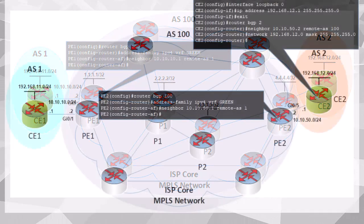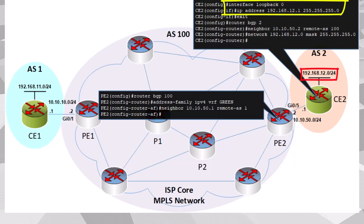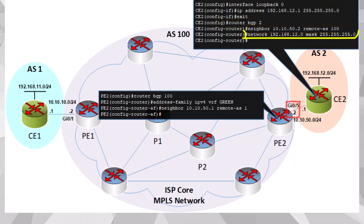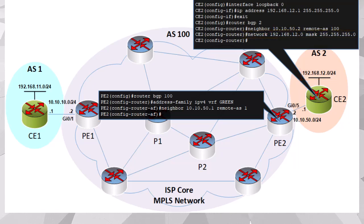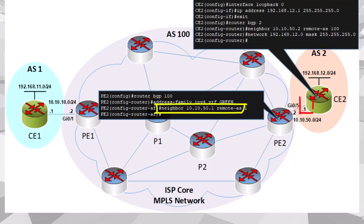Now let's do the same configuration on the CE2 and PE2 routers as well. The loopback is assigned the address space representing our customer network behind CE2. We also create the BGP peering using our neighbor command and advertise the customer network using the network command. And on the PE2 router, we enter the IPv4 address family configuration mode, assign the VRF of green to that address family, and create the neighbor adjacency with CE2.